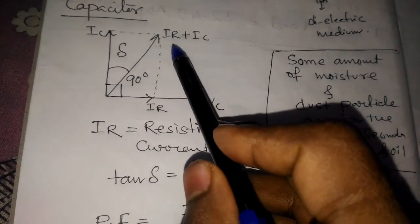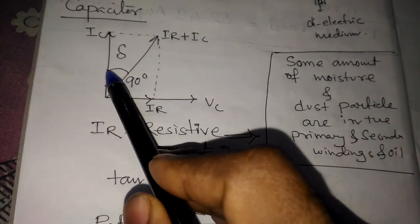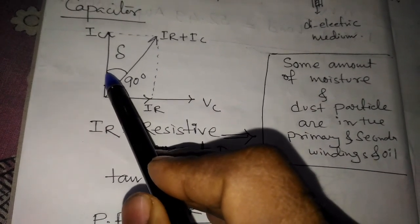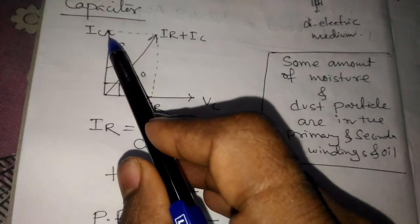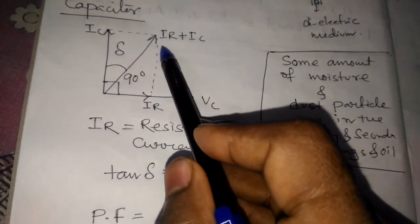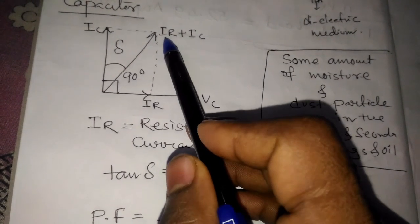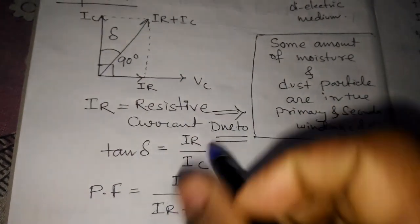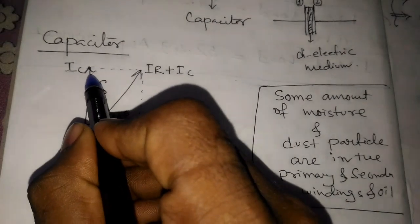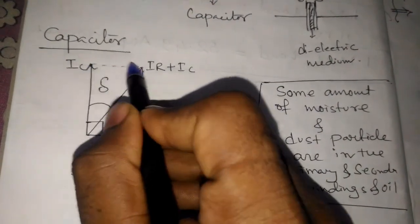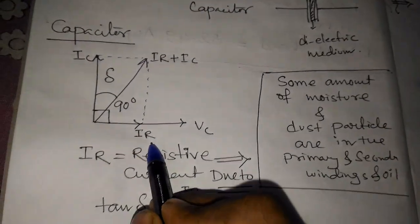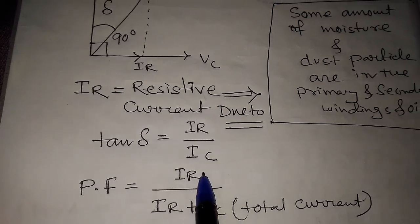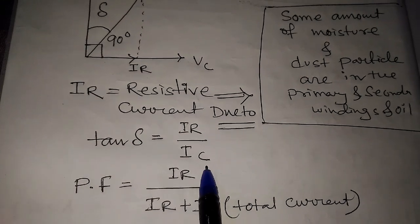When resistive current flows, the resultant current becomes IR plus IC. This delta angle deteriorates from the previous IC angle — that is the resultant current. This displacement is due to the resistive current. So Tan Delta equals IR divided by IC — resistive current divided by capacitive current.